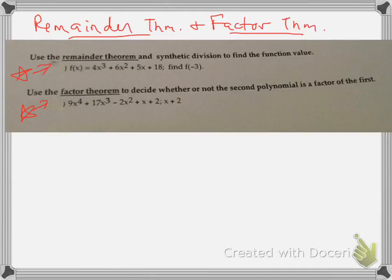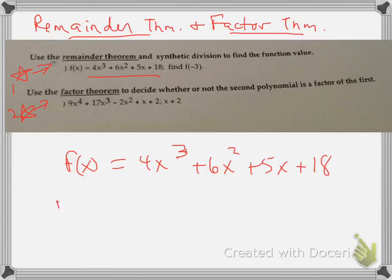Use the remainder theorem and synthetic division to find the function value. So I'm going to rewrite this first problem. f of x equals 4x cubed plus 6x squared plus 5x plus 18. And we are told to find f of negative 3.